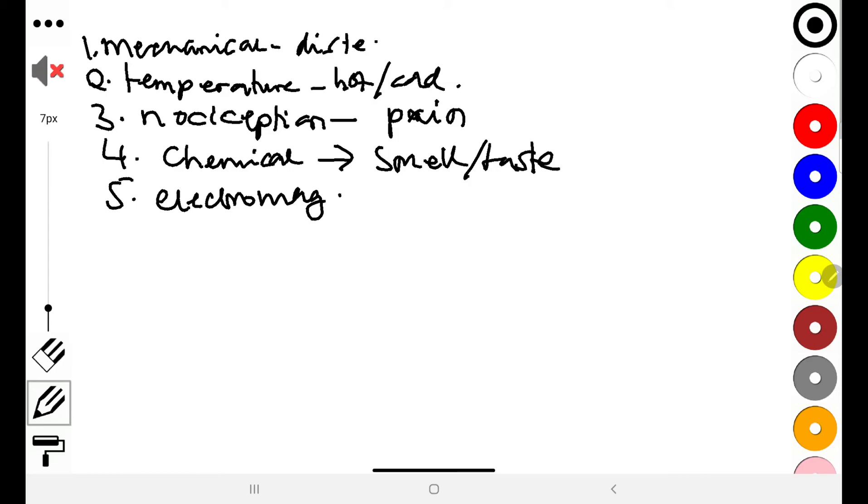Then we have others that include electromagnetic. We have several other types of sensations that are not typically so much sensations. These are special senses. We are talking about things like sound or light. Those are known as special senses.